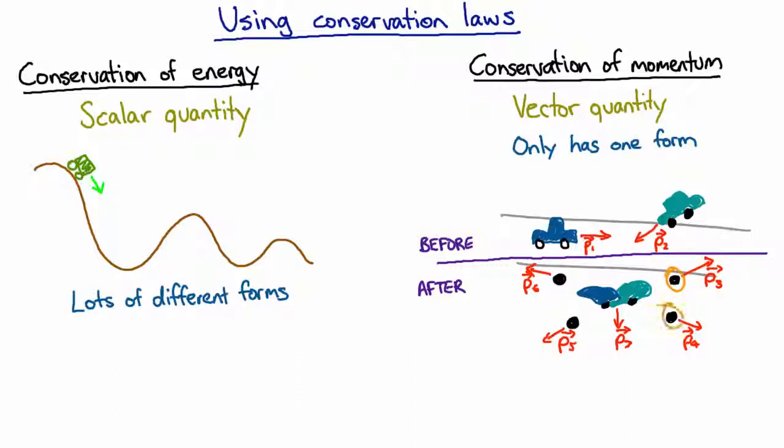there are many forms - the kinetic energy of pieces flying off, plus potential energy required to change the shape of the cars and rip bits off. Fundamentally that's electrical potential energy, but we're not tracking it, so it's hard to use conservation of energy for this problem.